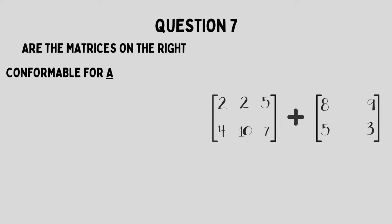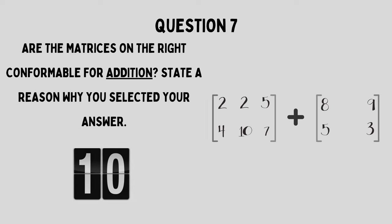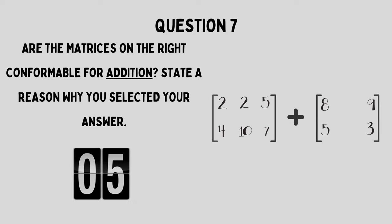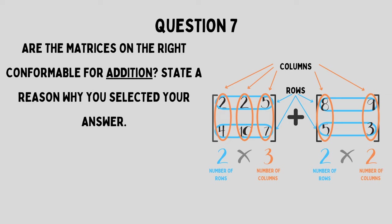Number seven: Are the matrices on the right conformable for addition? Are we able to add these matrices to get a valid answer? As you can see, we have the same number of rows, but our columns are different — they are of different orders. In order for these to be conformable, they must have the same number of rows and the same number of columns; in other words, they must have the same order. If you do not know what the order is, you can check out our last video.